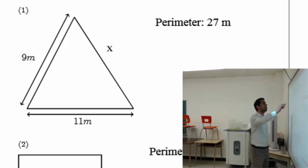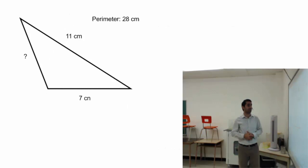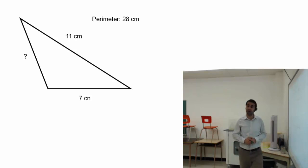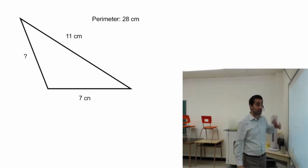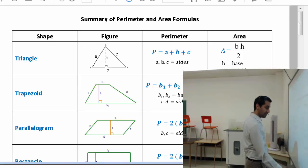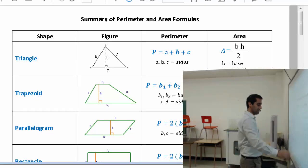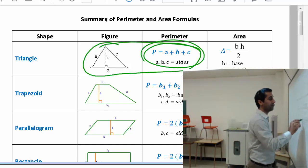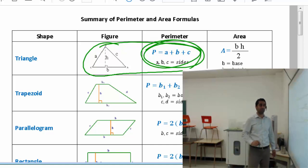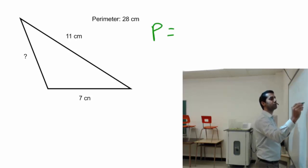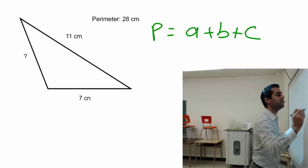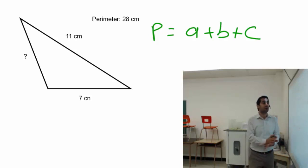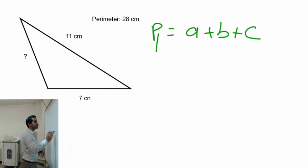This is one of your homework problems, so let me do an example first. We are looking at a triangle and the perimeter is given. The first thing, as usual, is to write down the formula. The triangle perimeter formula from the formula handout is P equals a plus b plus c.